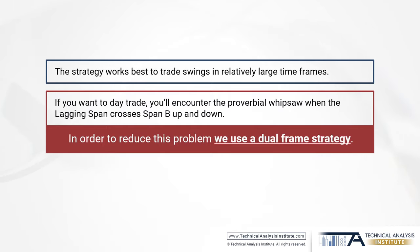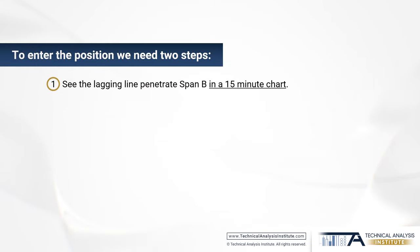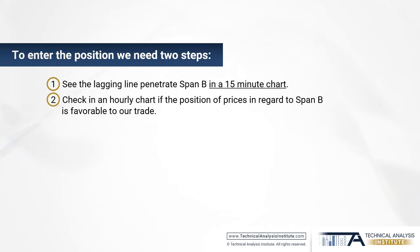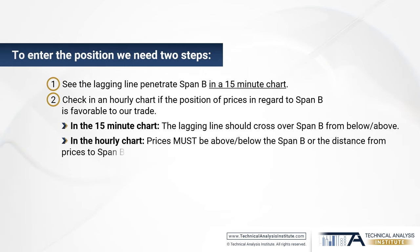The dual frame strategy means that to enter the position we need two steps instead of one. First, we need to see the lagging line penetrating span B on a 15-minute chart, exactly as we did in the previous example. But that's not all. The second step is that we need to check on an hourly chart if the position of prices relative to span B is favorable to our trade. For example, if we want to enter long, not only should the lagging line be crossing over span B from below on the 15-minute chart, but prices must be above span B on the hourly chart — or the distance from prices to span B must be large — which would indicate the odds favor our long position.